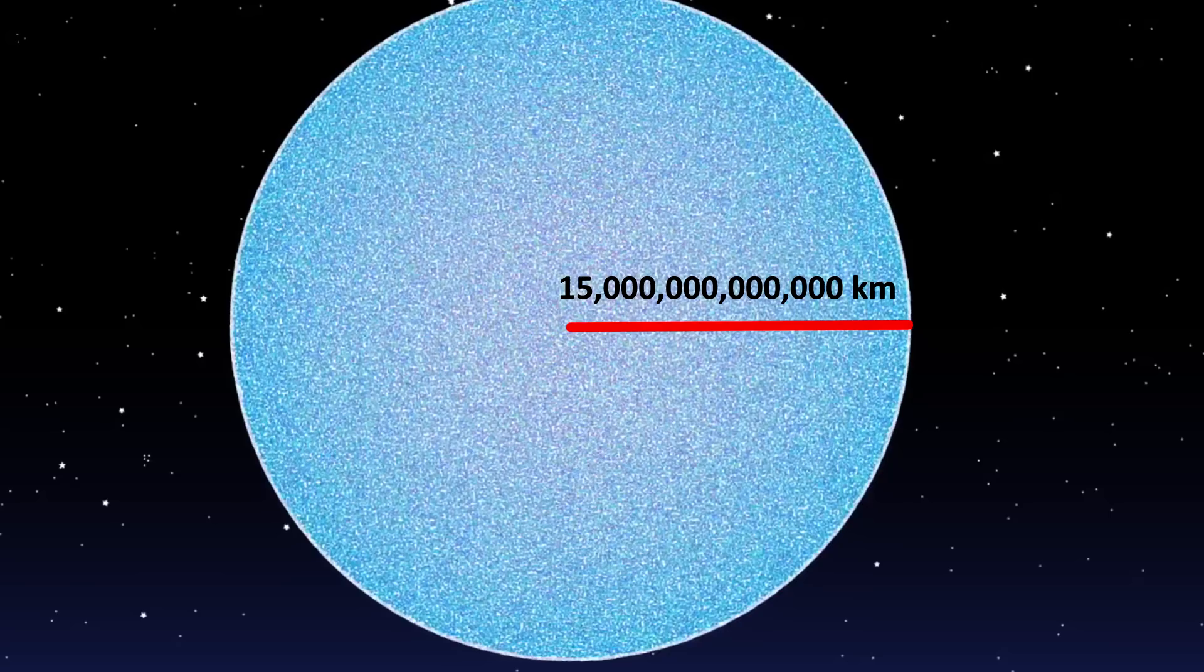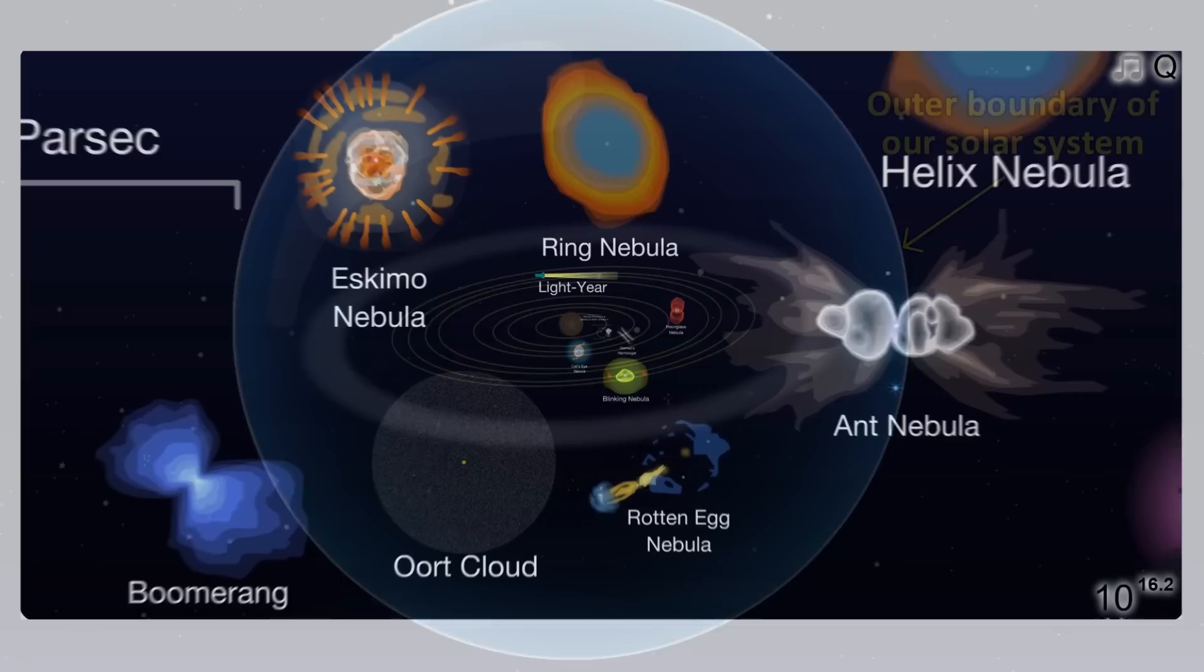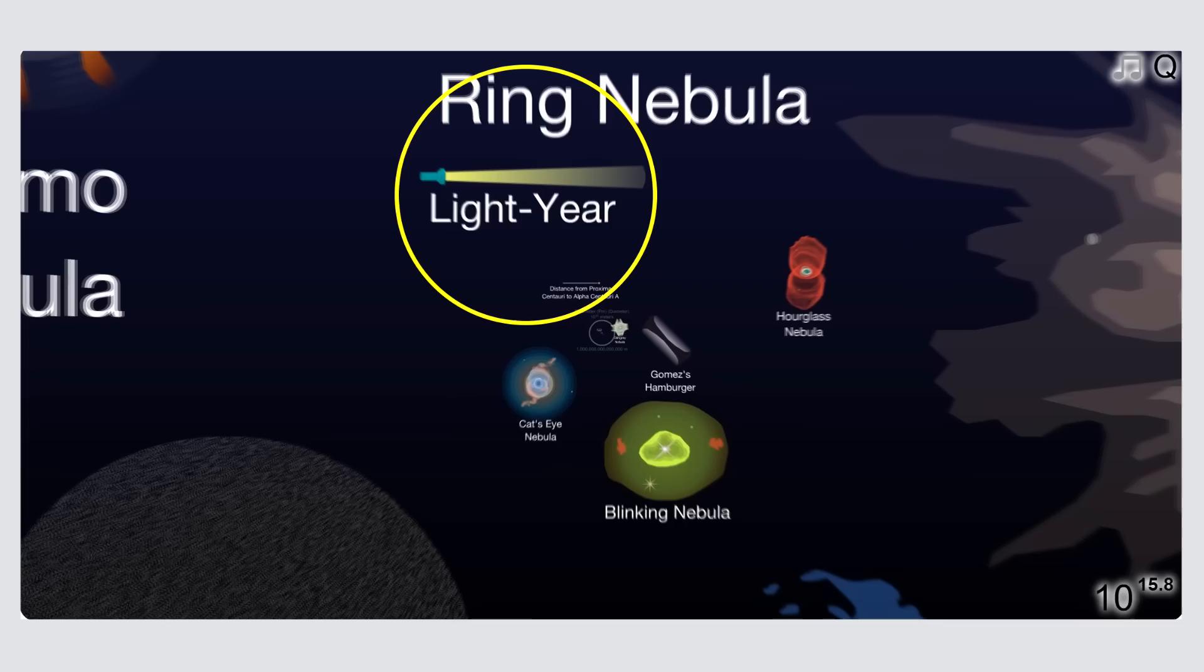Now we're at the scale of a light year, which is about 9.4 quadrillion meters, or 9.4 trillion kilometers.